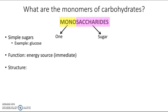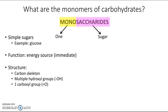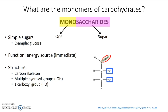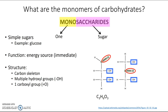In terms of their structure, monosaccharides all have the same general type of structure that consists of a carbon skeleton, multiple hydroxyl groups, and one carboxyl group. Here's an example with a three-carbon skeleton, two hydroxyl groups, and a carboxyl group — giving a formula of C3H6O3. Here's another example with the same formula C3H6O3 but a different structure, making these two molecules isomers.